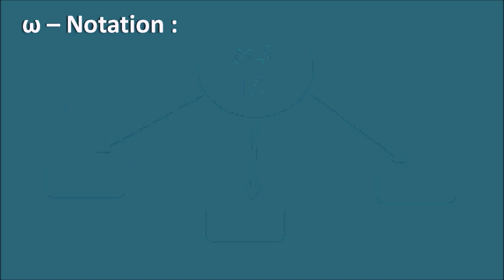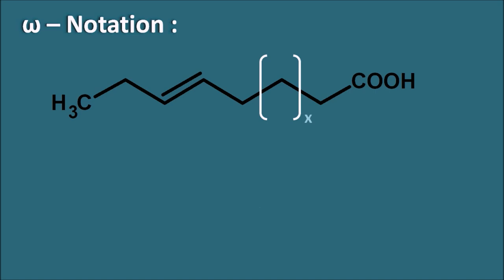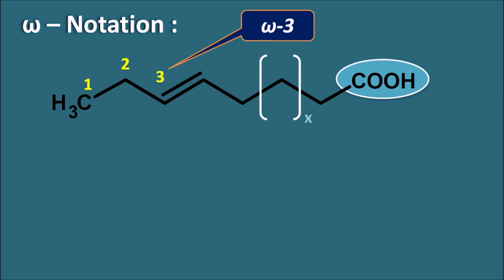First of all, let us see what is omega notation. Suppose we take a fatty acid with n number of carbons. We give the numbering from the carboxylic acid because it is the principal functional group. But if we give the numbering from the other terminal — 1, 2, 3 — we can observe the first double bond at the third position from that terminal. So this fatty acid is indicated as an omega-3 fatty acid. Omega indicates the numbering from the end other than the carboxylic acid.